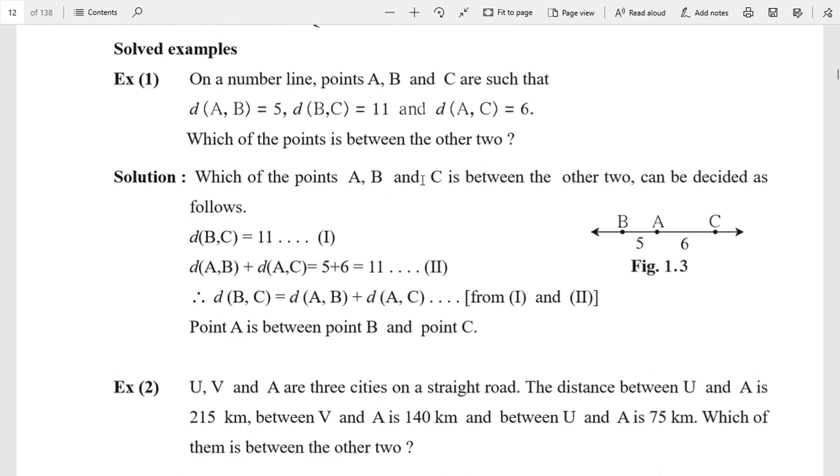In the solution, which of the points A, B, C is between the other two can be decided as follows. The total distances are: distance AB, distance BC, and distance AC. First, the greater value is distance BC = 11, that is equation number one.